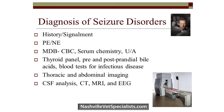For older patients, thoracic and abdominal imaging should be done to look for neoplasia or infectious disease. If a primary intracranial lesion is suspected, advanced brain imaging or a spinal tap may be needed. EEG is not commonly available in veterinary practice — it's very difficult to perform on animals, and even in cooperative patients it's hard to get a good tracing.